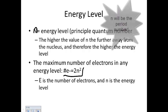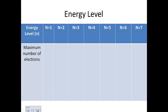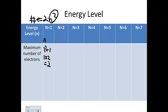You need to memorize this: the number of electrons is equal to 2N squared. We go through seven energy levels, but starting at N=1, following order of operations — square N before doubling — 1 squared equals 1, times 2 equals 2. So you have two electrons in the first energy level.